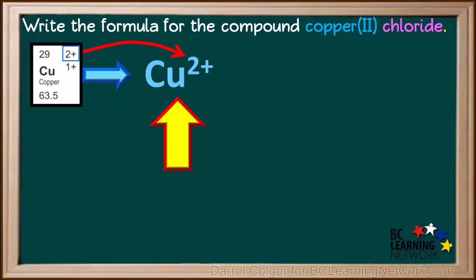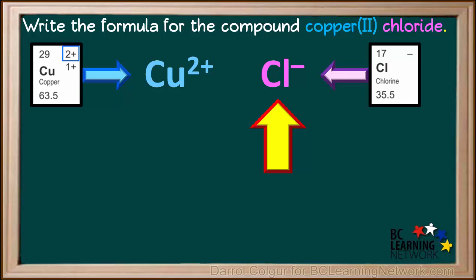So the copper ion in this compound is Cu2+. The chloride ion has only one possible charge, and that is negative 1.